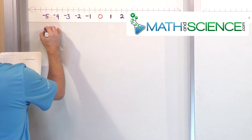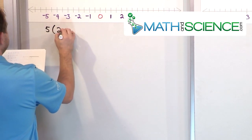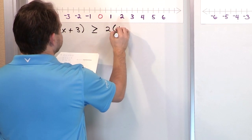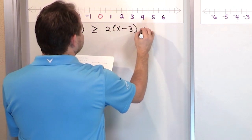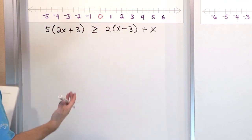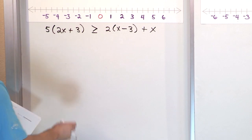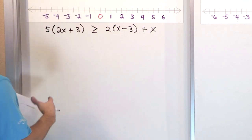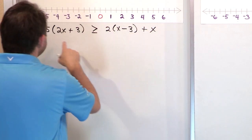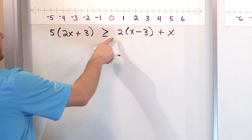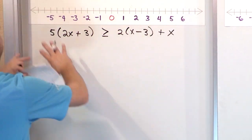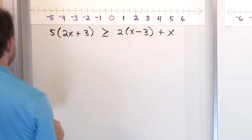Here's a good problem. What if we have 5 times 2x plus 3, and that's greater than or equal to 2 times x minus 3 plus x. The first thing you need to do is pretend this is an equal sign. We have an x in multiple places, so we can't simplify directly. We'll distribute the 5, distribute the 2, collect all the like terms, then move every x term to one side and all the other terms to the right.